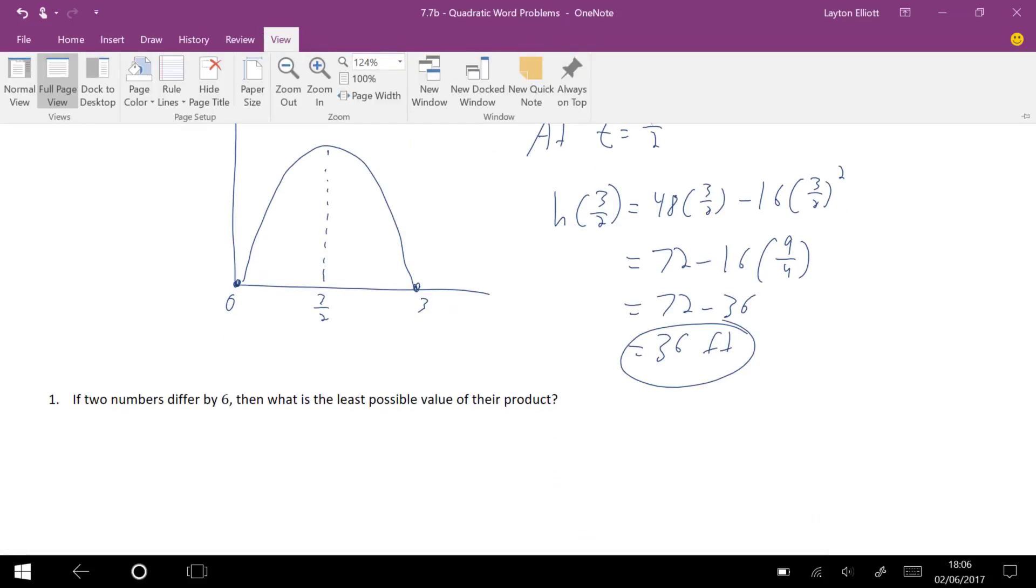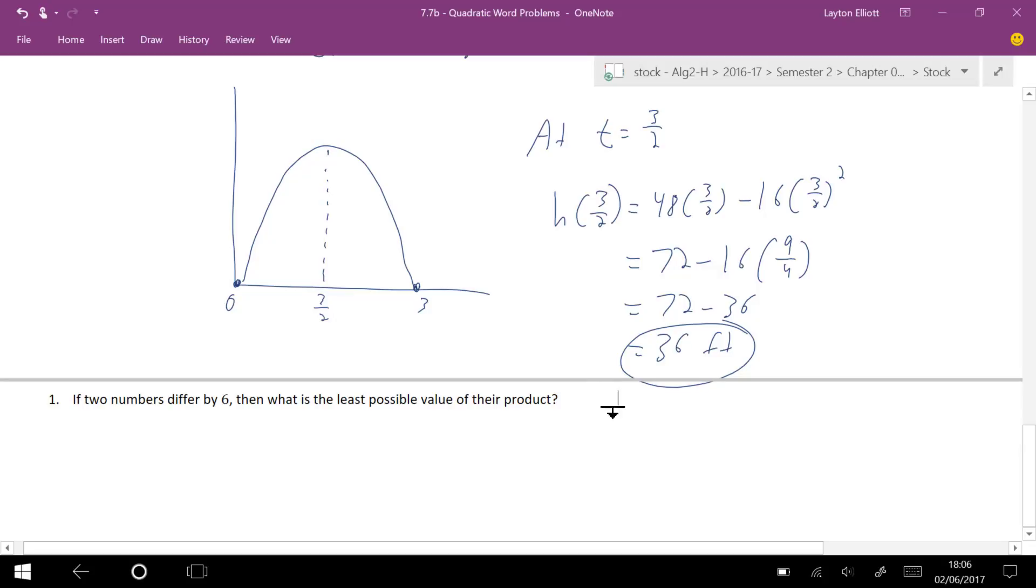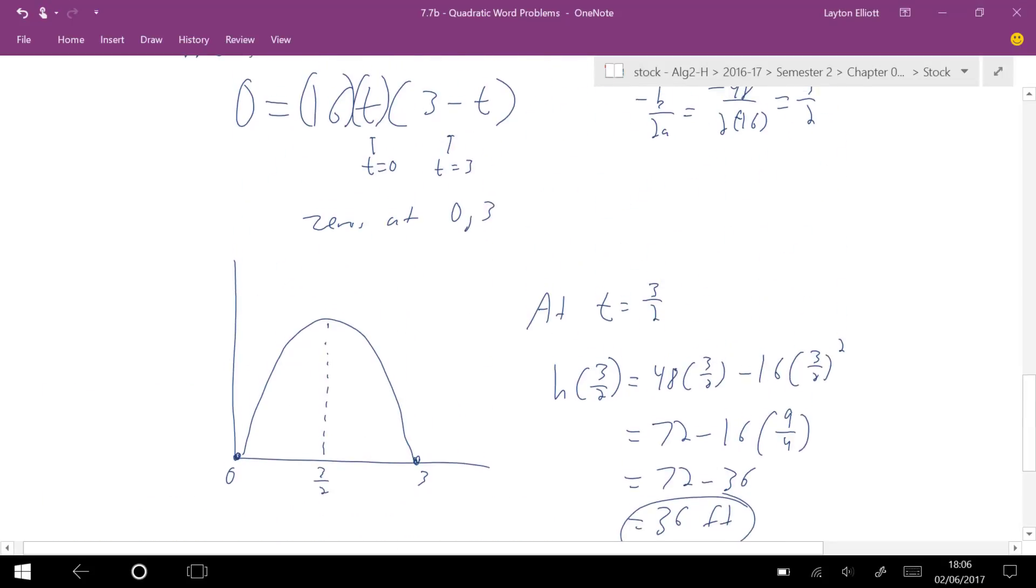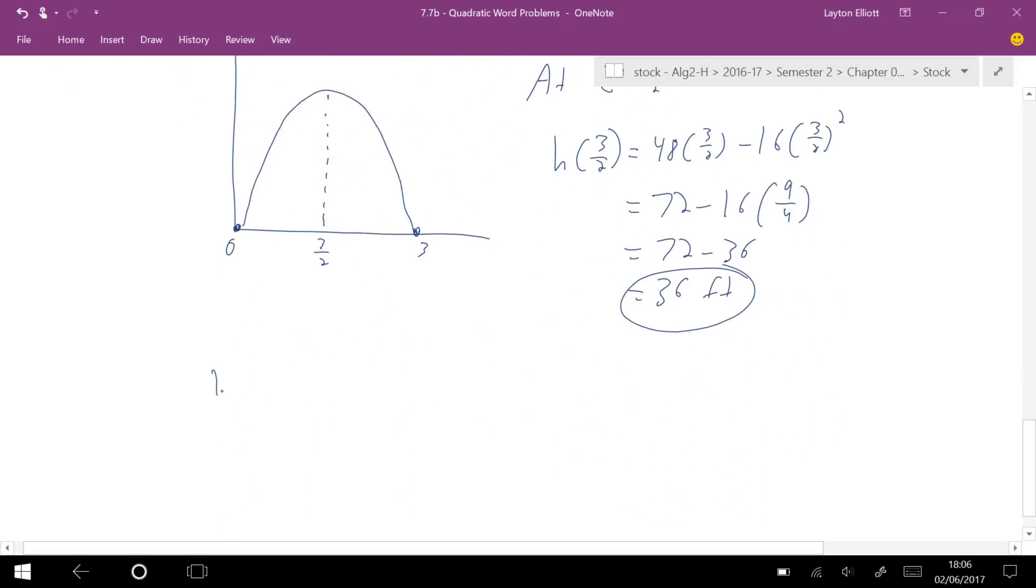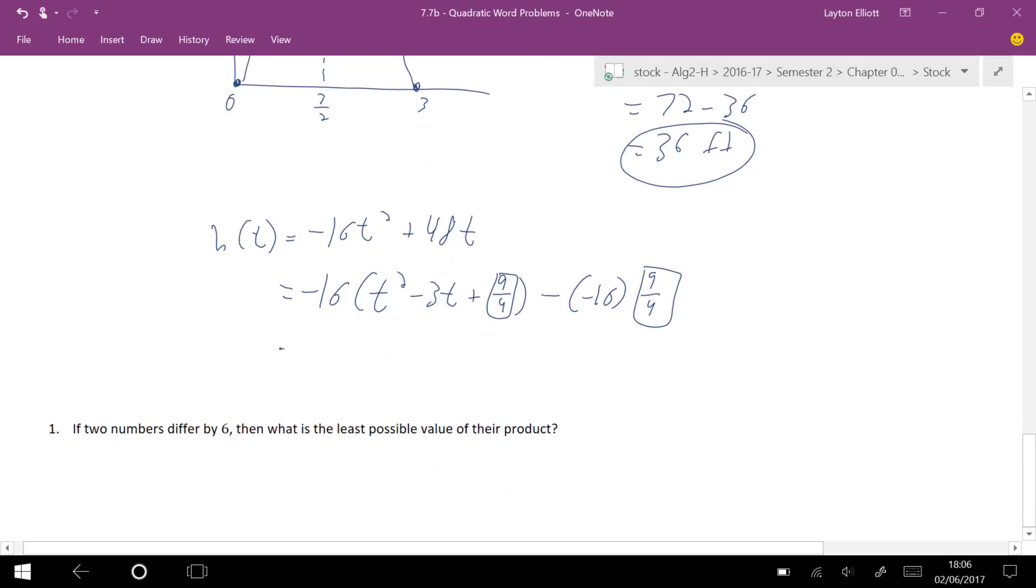So that's one way to look at it. I'm going to give us some more space here because I want to look at it one other way before we jump to this last problem. Another way is to take this original problem. So h(t) equals negative 16t squared plus 48t and just complete the square on it. So negative 16 times (t squared minus 3t plus), and I go half of 3 squared is 9 fourths, and then I subtract that 9 fourths out, but after I multiply it by negative 16, so negative 16 times 9 fourths.